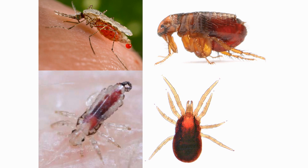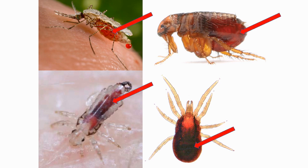Arthropods need a blood meal to produce eggs and also to grow from one life stage to the next. They get this blood from biting animals and humans. If you look carefully at these arthropods, you can see that their bellies are filled with blood.